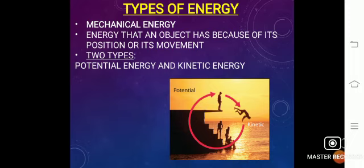Types of Energy. Mechanical Energy: The energy possessed by an object because of its position or its motion. Potential Energy and Kinetic Energy are the two types of Mechanical Energy. Potential Energy is because of the position of an object and Kinetic Energy is because of the motion of an object.